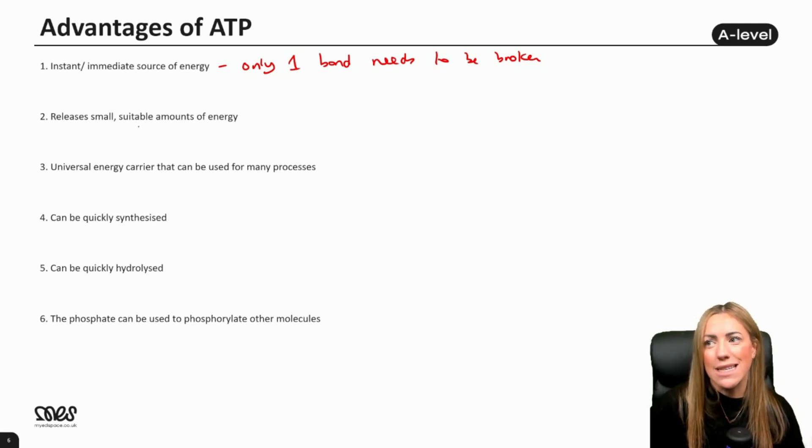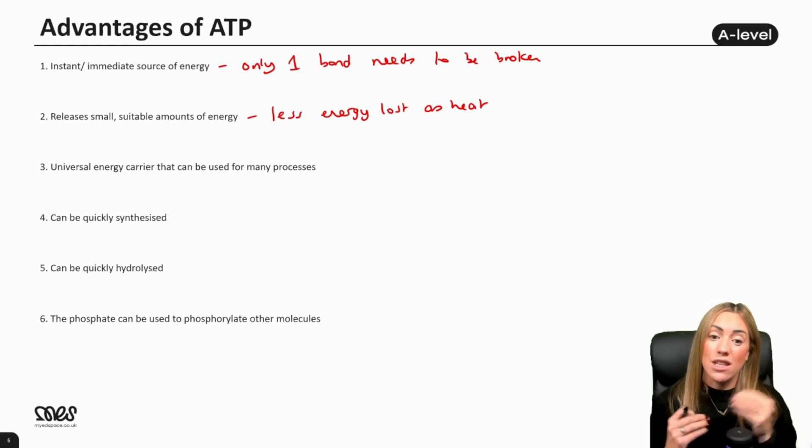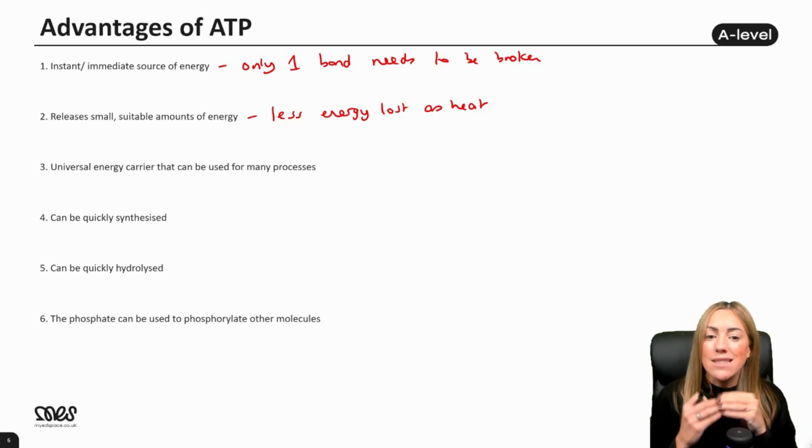It also releases small suitable or manageable amounts of energy. Now you might think that doesn't sound like an advantage, but it is because it's far less wasteful. You're going to lose less energy as heat. It makes sure you can hydrolyze just enough ATP to get the right amount of energy that the reaction needs without being wasteful or losing lots of energy as heat. So the fact that it releases a small or suitable amount of energy every time is an advantage of using ATP.